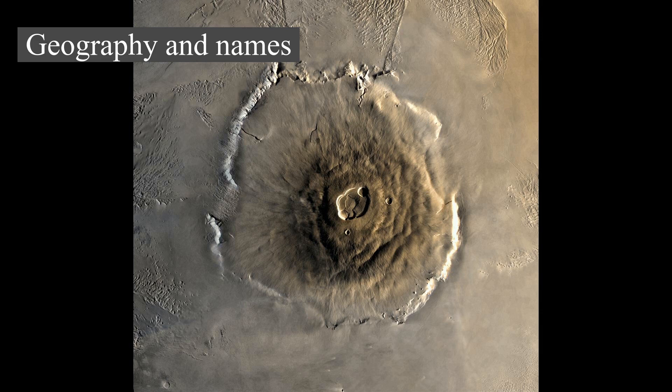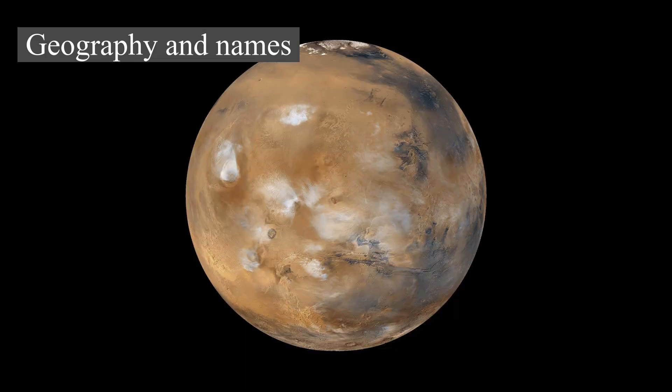Small valleys are named for rivers. Large albedo features retain many of the older names but are often updated to reflect new knowledge — for example, Nix Olympica (the snows of Olympus) has become Olympus Mons (Mount Olympus).